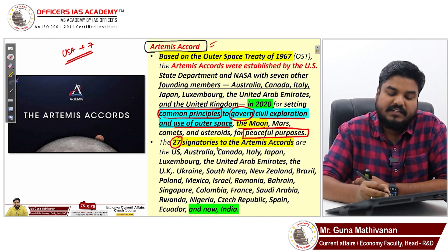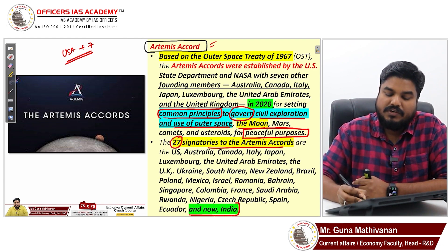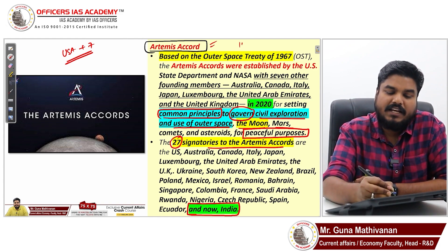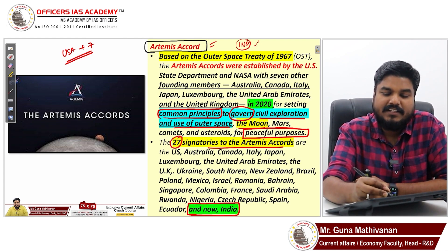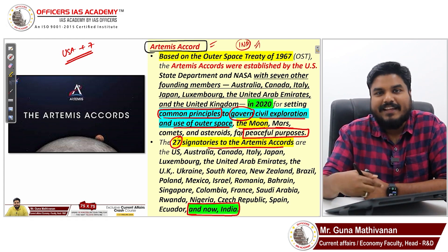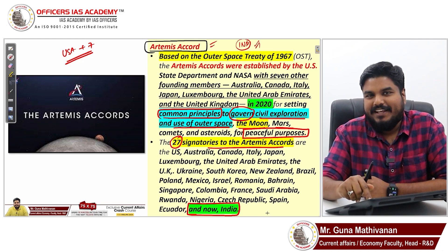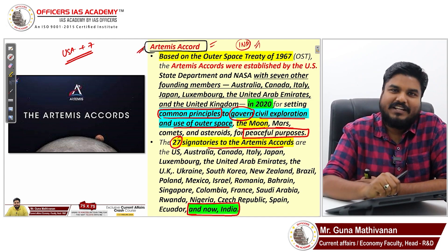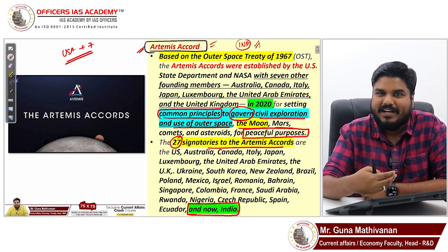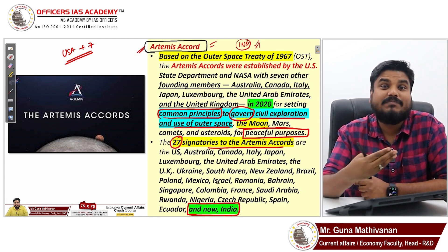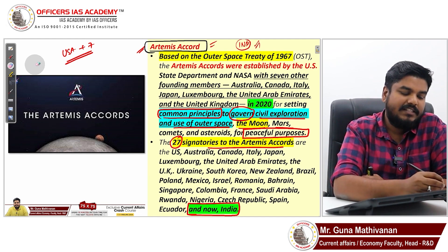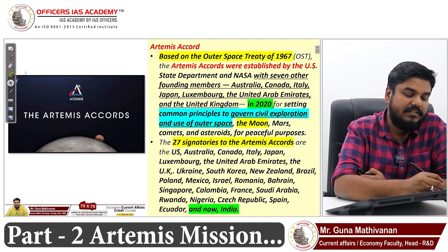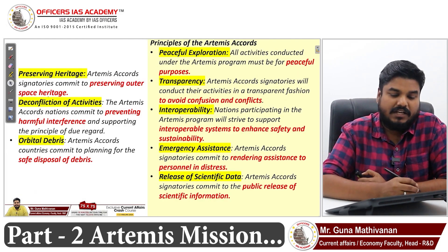There are 27 signatories to the Artemis Accord, and India is also a signatory. This accord was in the news because India signed it. That is why I started from the five outer space treaties and the Moon Agreement — to build up the context — and now let's look at the principles that govern the Artemis Accord.